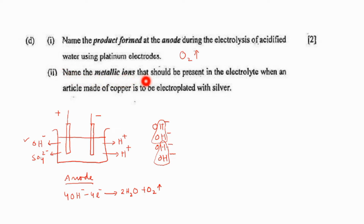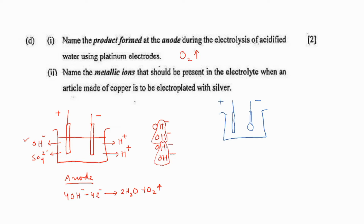Name the metallic ion that should be present in the electrolyte when an article of copper is to be electroplated with silver. We have a copper spoon and we are going to electroplate it with silver. As we are plating with silver, the silver rod should be kept as the anode. The electrolyte should definitely contain silver ions. A proper electrolyte is sodium argentocyanide (NaAg(CN)₂). So the metallic ion that should be present in the electrolyte will be Ag⁺ ion, or it should be a salt solution of silver.